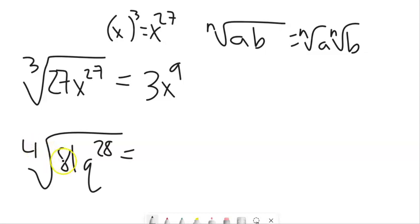Similarly here, 4th root of 81 is 3. 4th root of q to the 24th, it would be 6. 6 times 4 is 28. Q to the 6th.